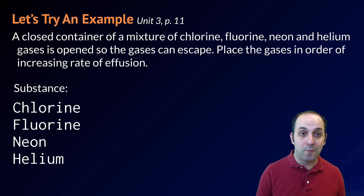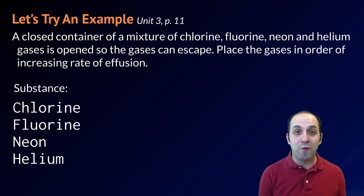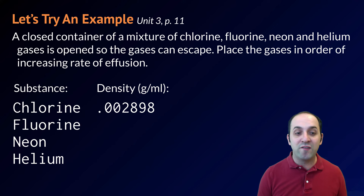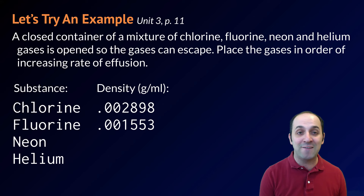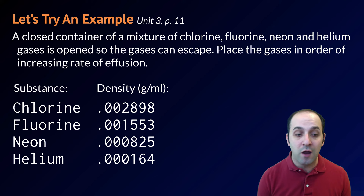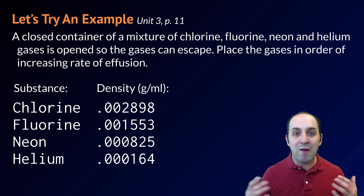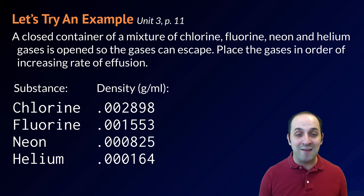The first thing we're going to do is figure out what substances we're talking about — I've written them down here. Next, I want to get their densities from reference table S. All of these substances exist as gases at the temperature at which reference table S values were established. The density of chlorine is 0.002898 g/mL, fluorine is 0.001553 g/mL, neon is 0.000825 g/mL, and helium is 0.000164 g/mL.